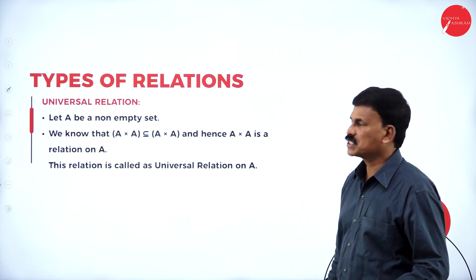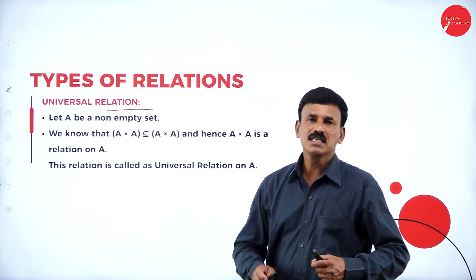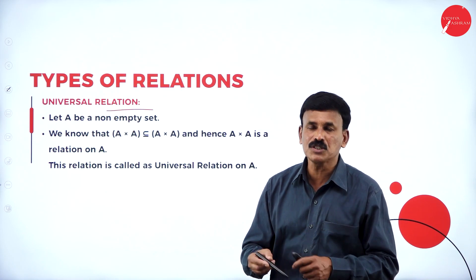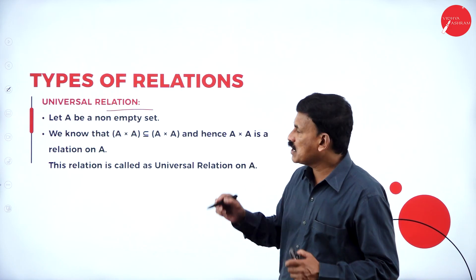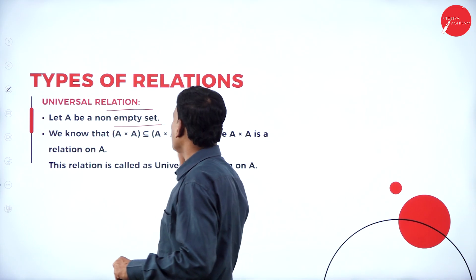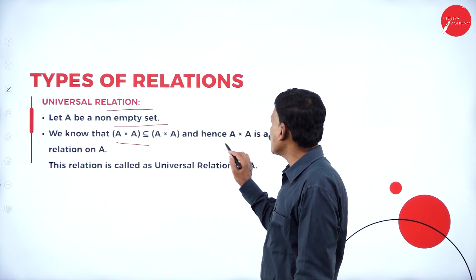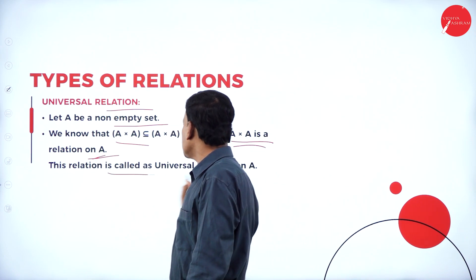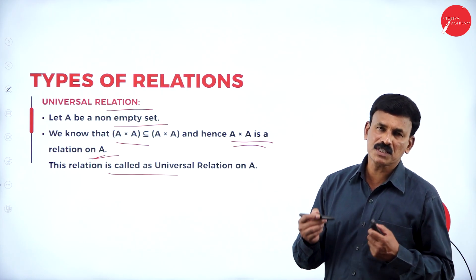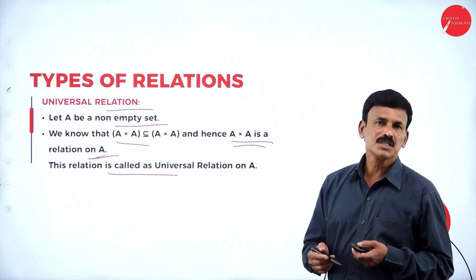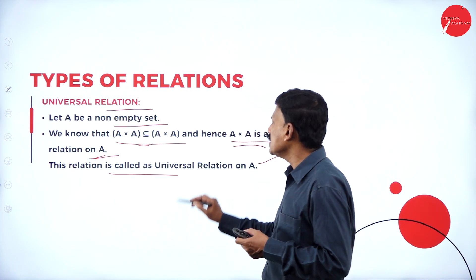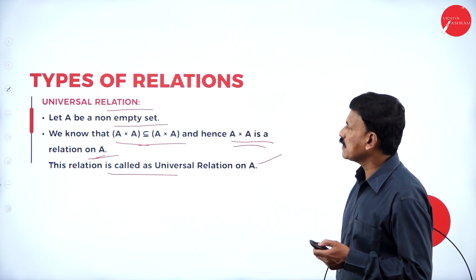Now let us come to the universal relation. Universal relation means it is a set in which every element of the set is related to another element. So every element of the set is related to another element. Since A cross A is a subset of A cross A, it is called a relation on A — and this relation is called the universal relation on A.